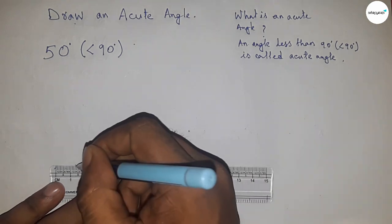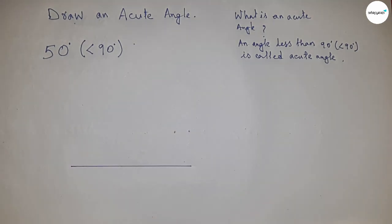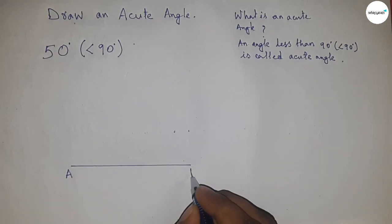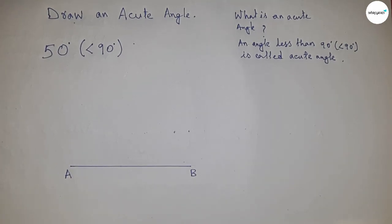First, drawing a line of any length and this is line AB. Next, we're going to draw the 50 degree angle.